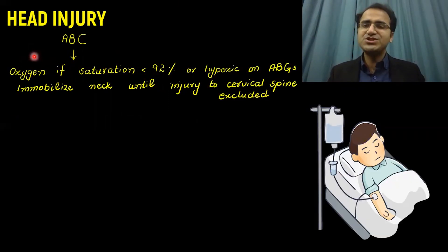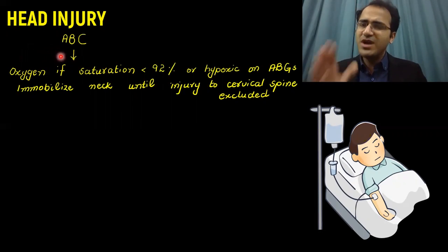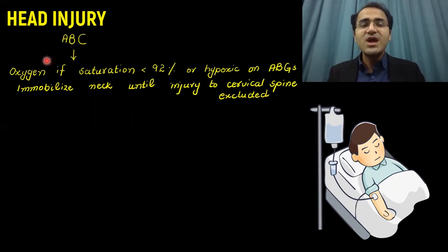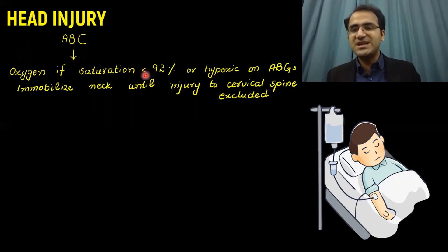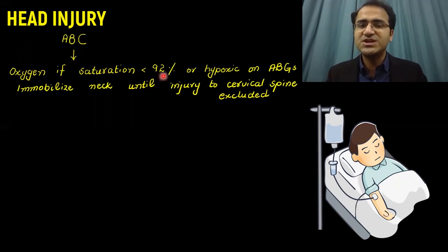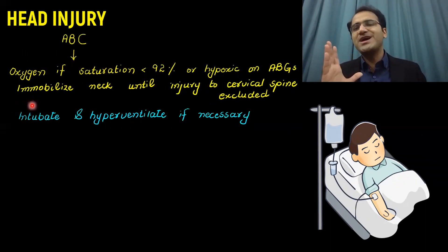Whenever a patient with head injury presents to you, always have an ABC approach — always protect the airway. Airway is the priority. Give oxygen if the saturation is less than 92% or if the patient is hypoxic. Immobilize the neck until injury to the cervical spine has been excluded.